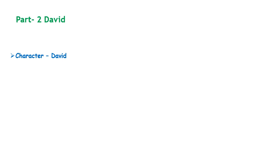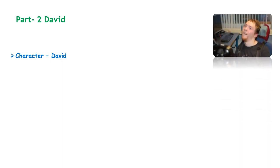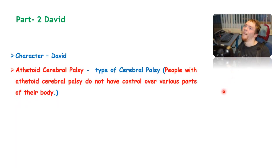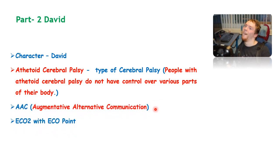Now we are going to learn the remaining part. The character we are going to see in this video is David. Just like Alicia, David is also affected by cerebral palsy, but a different kind known as athetoid cerebral palsy. This disorder makes the person's condition very difficult because they will not have control over various parts of their body — limbs may move on their own — and it varies from person to person. Because of this disorder, he is learning to use different technological devices, such as augmentative alternative communication and Eco2 with EcoPoint.